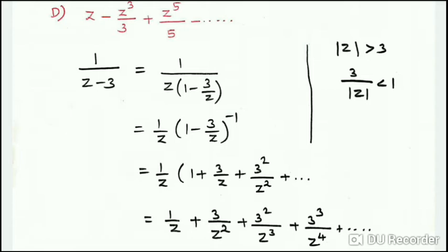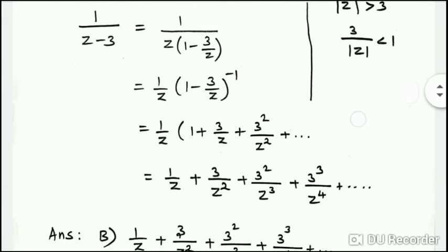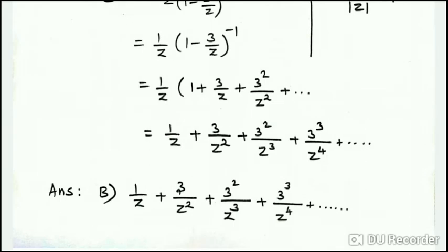The expansion of (1 - 3/z)^(-1) is 1 plus 3/z plus 3² /z² plus etc. Multiplying by 1/z gives 1/z plus 3/z² plus 3²/z³ plus 3³/z⁴ plus etc. This is the answer.